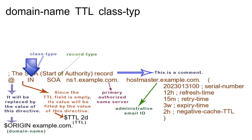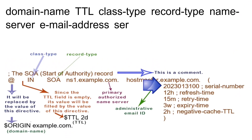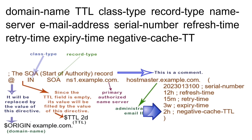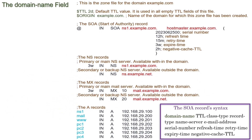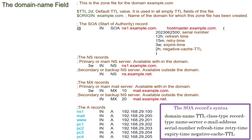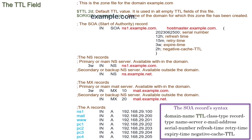It uses the following syntax. Let us understand this syntax field by field. The first field specifies the domain or zone name. The name server whose name we specify in the name server field becomes the authoritative name server for the domain or zone whose name we specify in this field. Since we used an @ symbol here, it will be replaced by the origin directive's value.